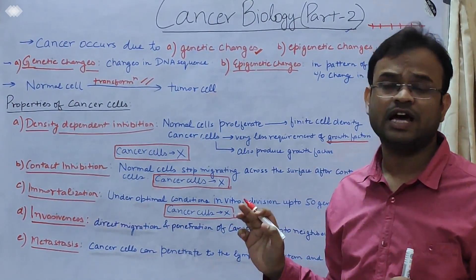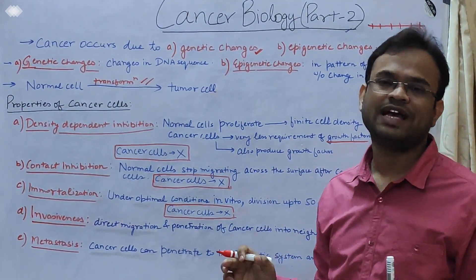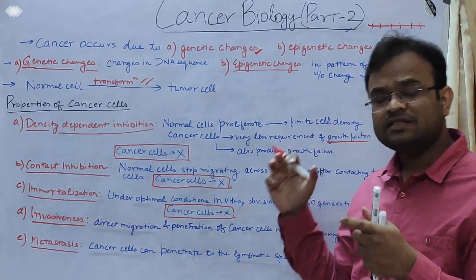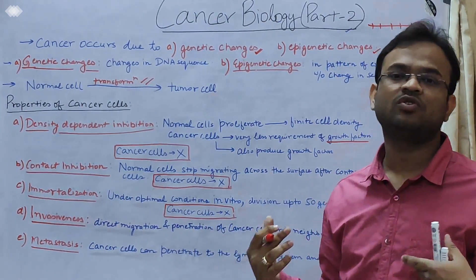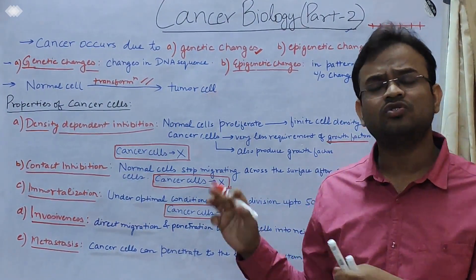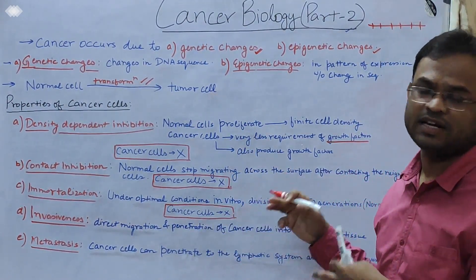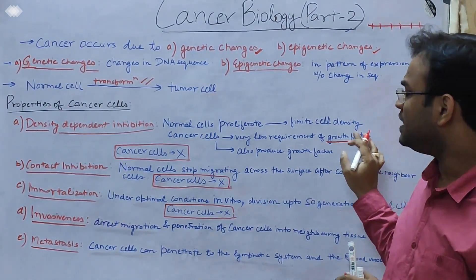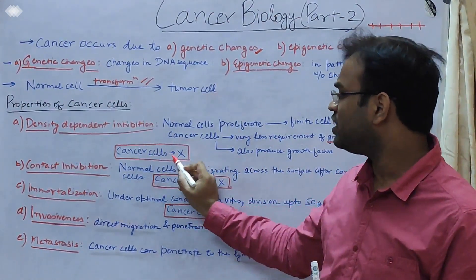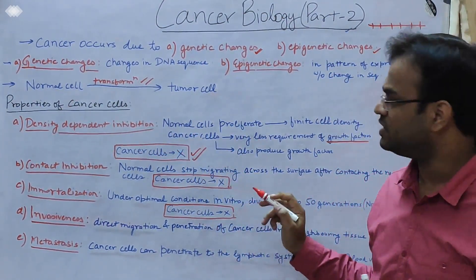In the case of cancer cells, the growth factor requirement is very low, and moreover, cancer cells have the capacity to produce their own growth factors. These are the reasons that the growth of cancer cells is infinite — they can grow to an unlimited extent. This is what is meant by density-dependent inhibition; cancer cells do not follow this rule.